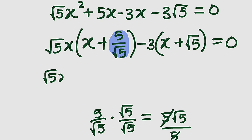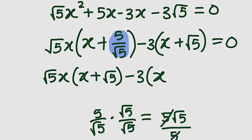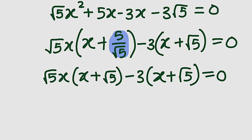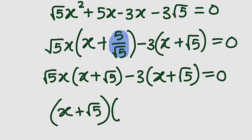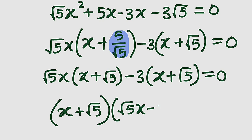So we have root 5x multiplied by x plus root 5, then minus 3 multiplied by x plus root 5. This is equal to 0. If you observe, the terms under the bracket are exactly the same, so we are going to factor one of them out. We have x plus root 5, multiplied by root 5x minus 3. The whole of this is equal to 0.